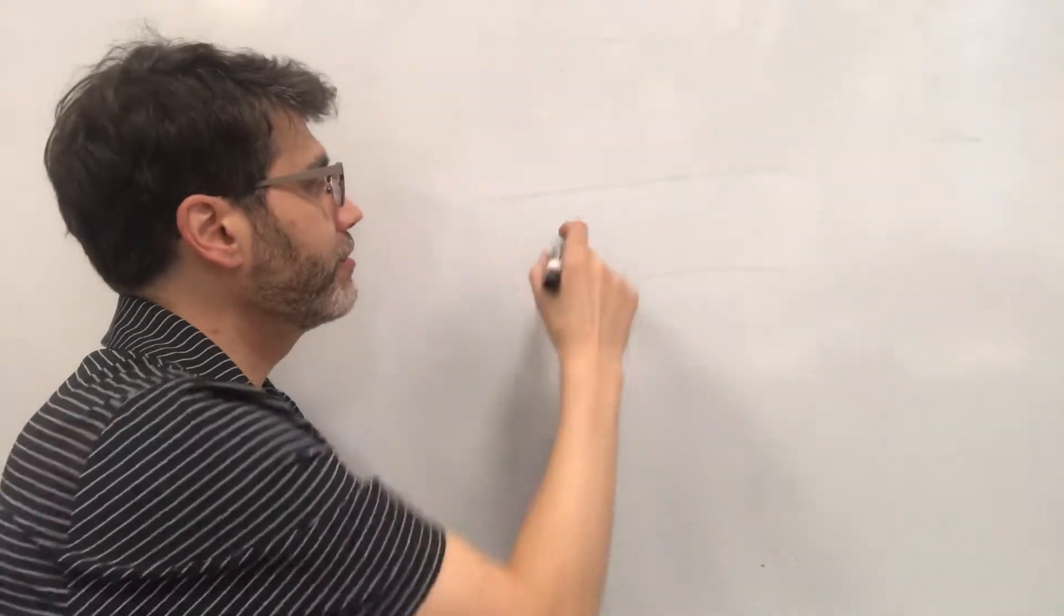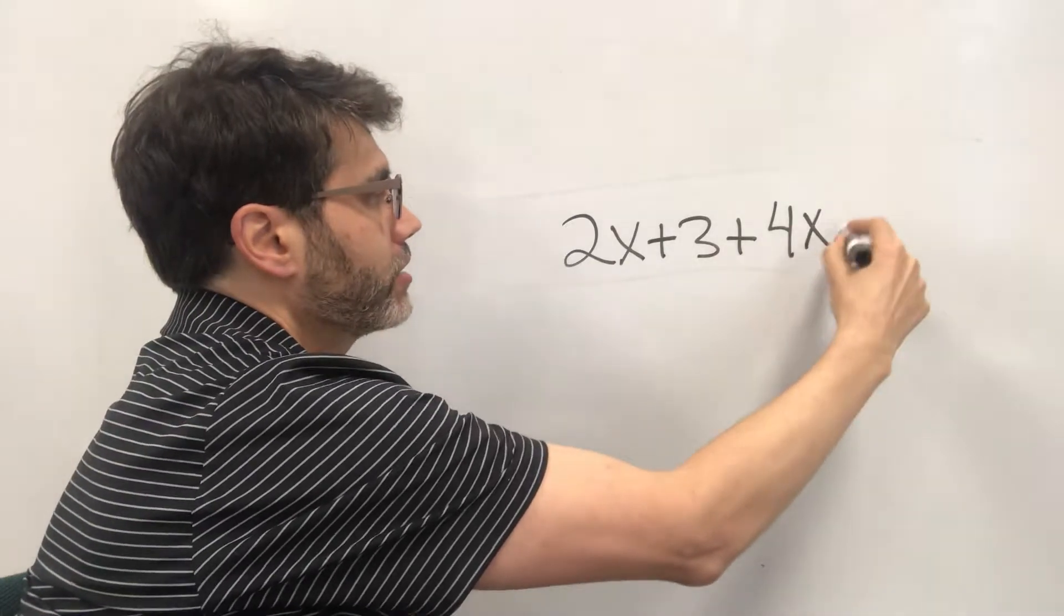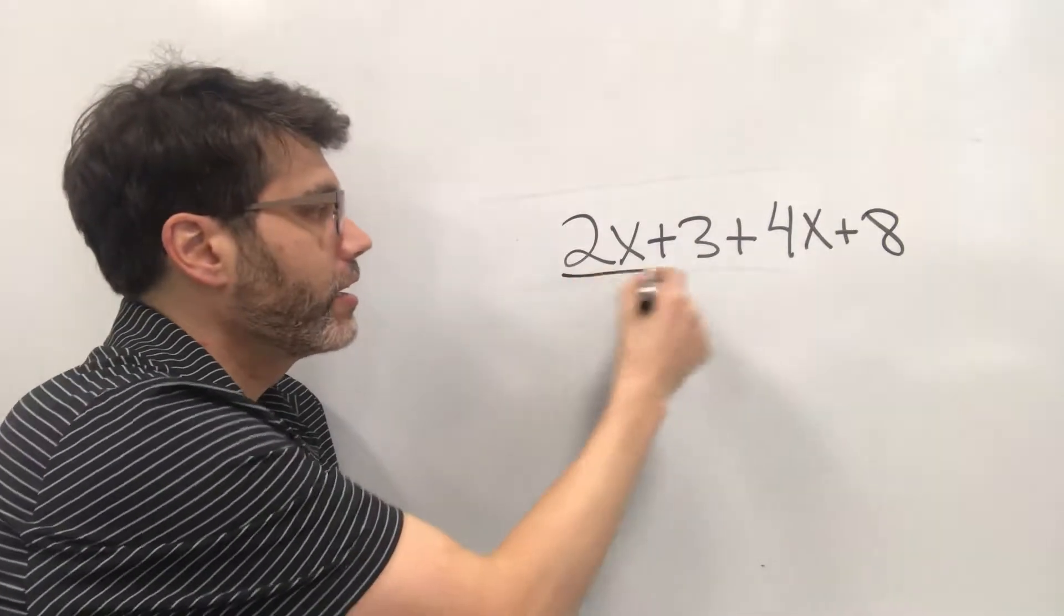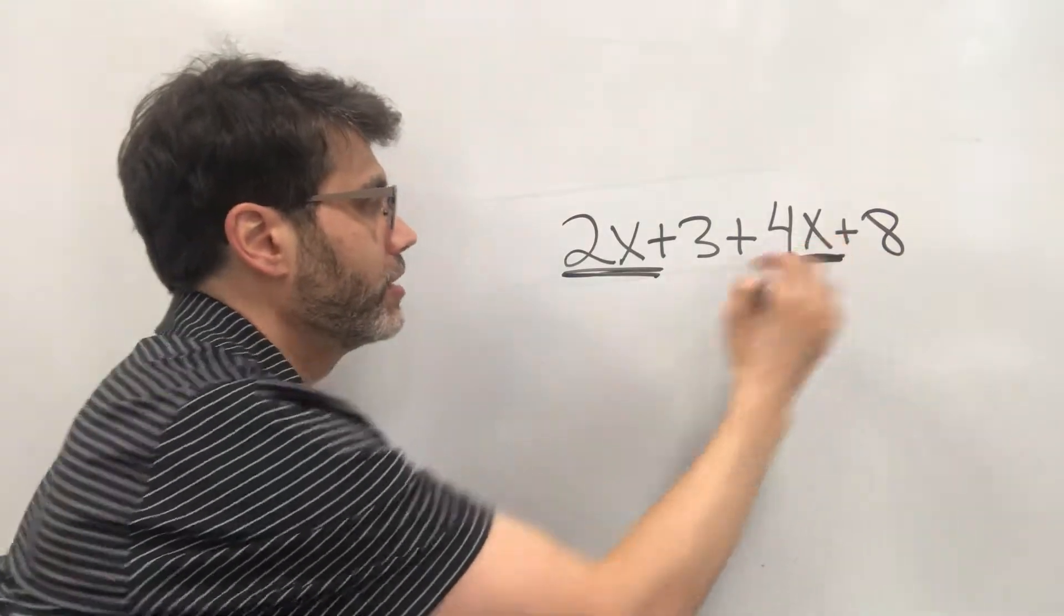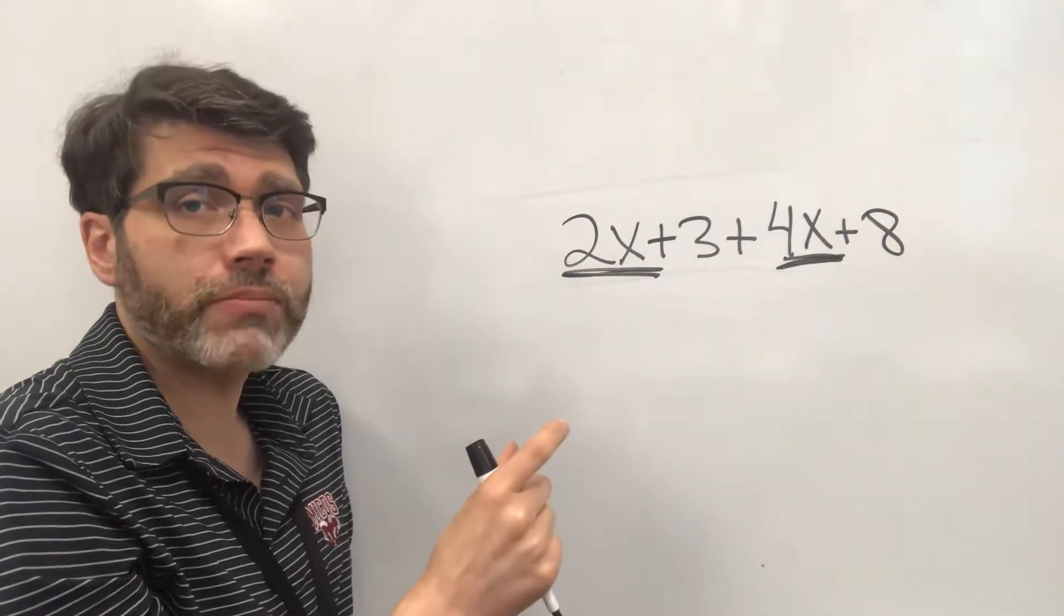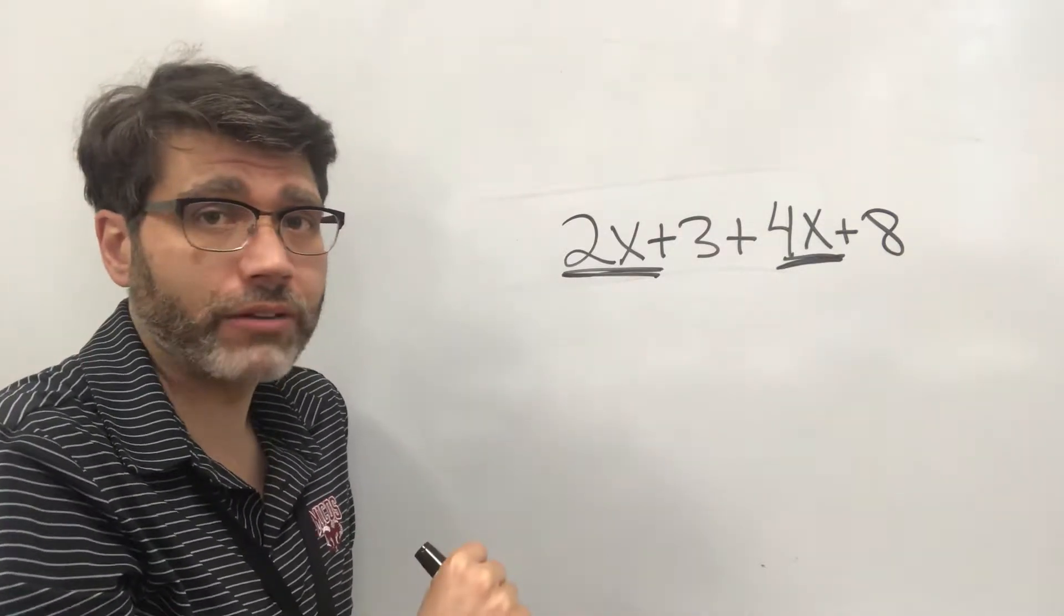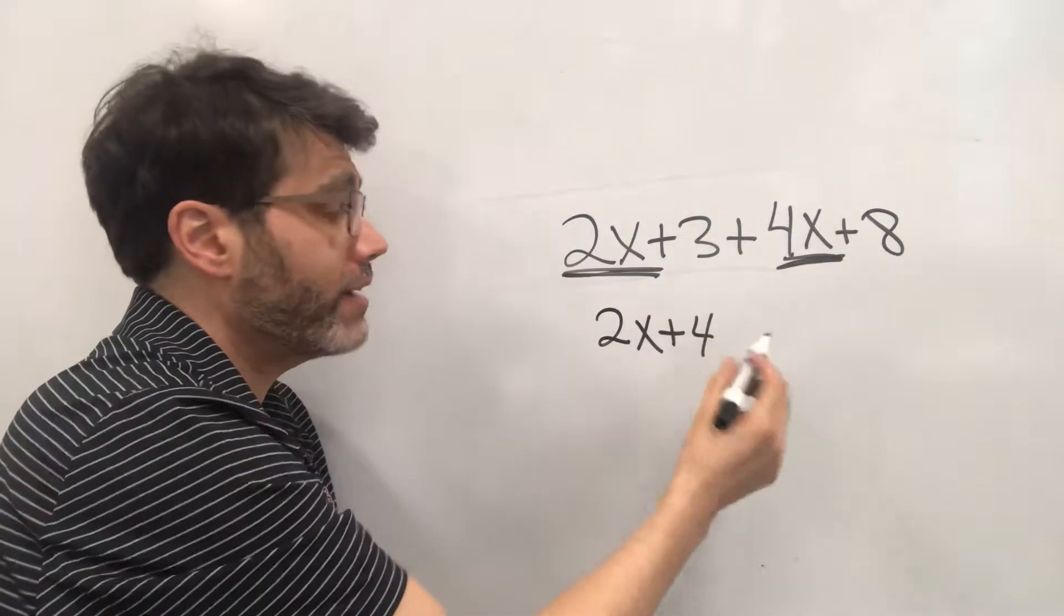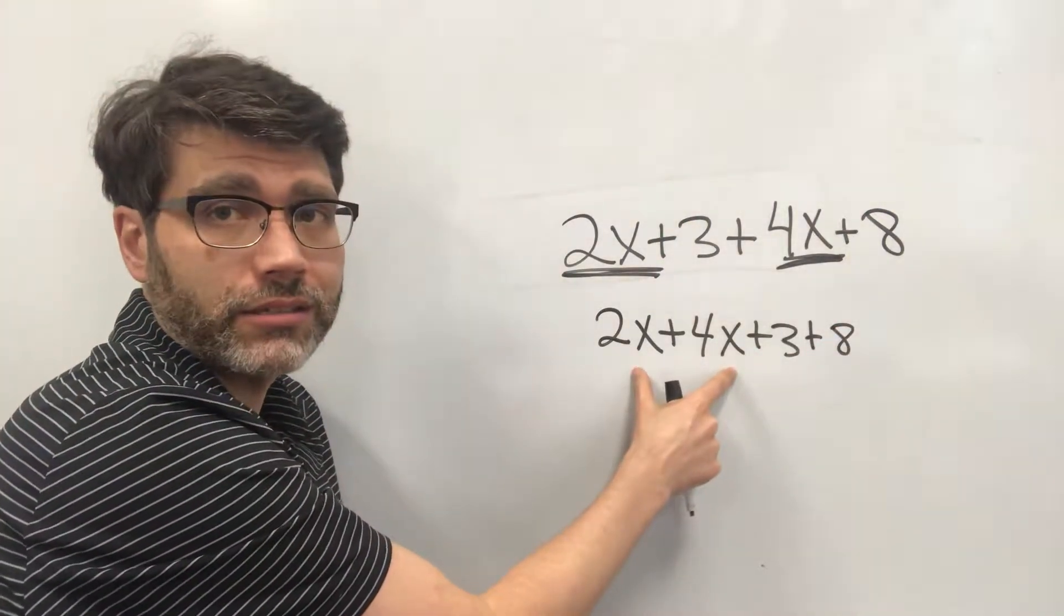What if we have 2x plus 3 plus 4x plus 8. So here we have these terms that include x's. So here we have these x's. So we can combine these. If it helps you you don't have to do this because of the commutative property of addition. The commutative property meaning a property where you can move things around. If you want to move these around to be close next to each other that's fine. You don't have to but if you want to because it makes it look easier on how to combine these. Go for it.